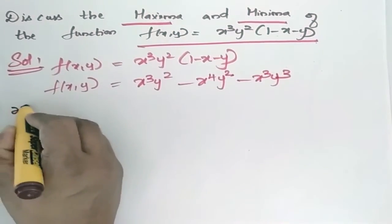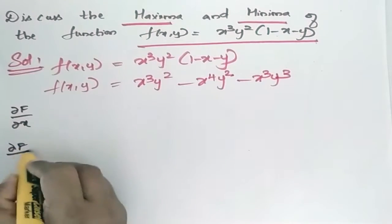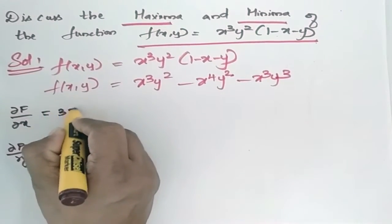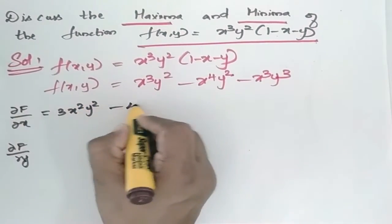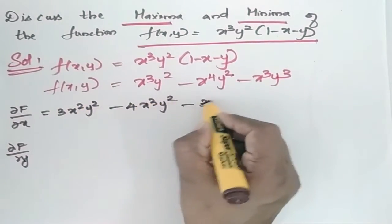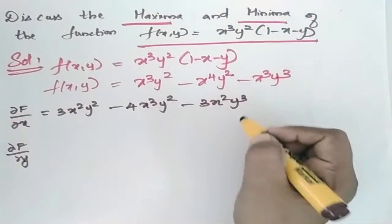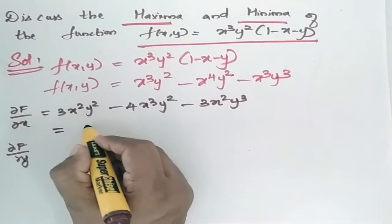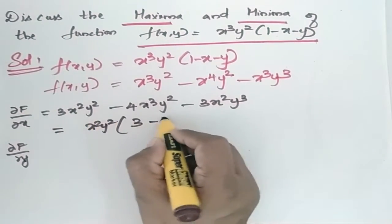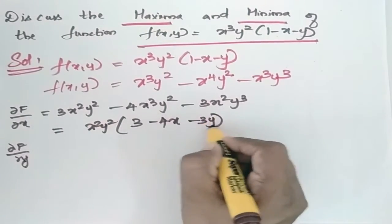Now find ∂f/∂x and ∂f/∂y. So ∂f/∂x is equal to 3x²y² - 4x³y² - 3x²y³. Taking x²y² common, this gives x²y²(3 - 4x - 3y).